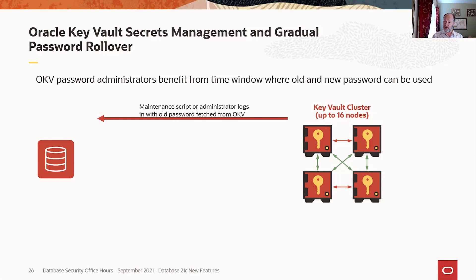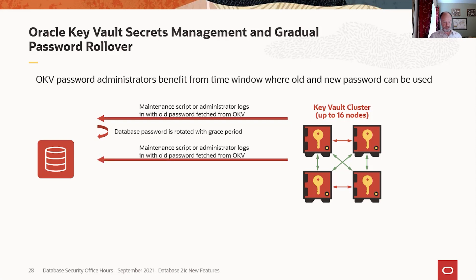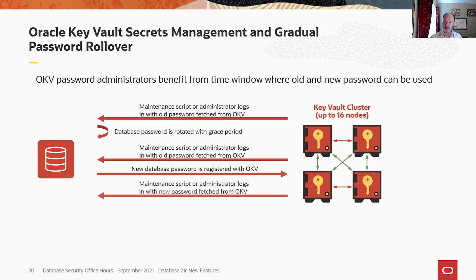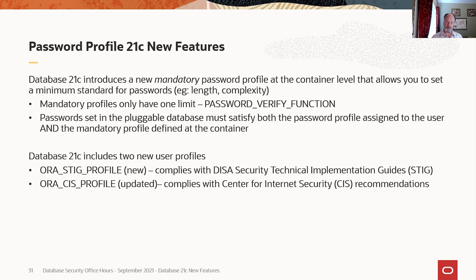Gradual password rollover is already integrated with Key Vault for secrets management. So if you're using Key Vault to manage passwords for scripts or administrator logins, you've got it set up: those scripts fetch passwords from Key Vault. Now you change the password in the database with gradual password rollover enabled, continue to use your old password, everything continues to work. You eventually get around to updating Key Vault, at which point Key Vault immediately begins to return the new password. No changes required.